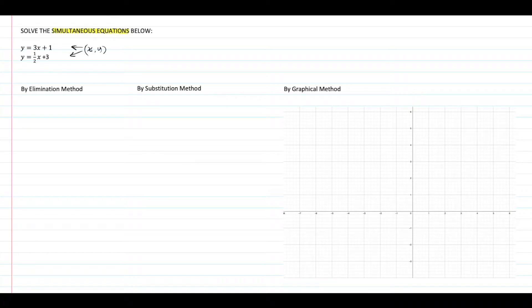There are three common methods to solve equations simultaneously. First is the elimination method. From the name itself, this method will eliminate one of the two variables by adding or subtracting the two equations.